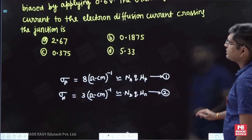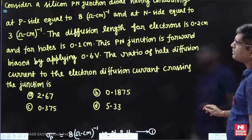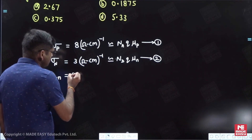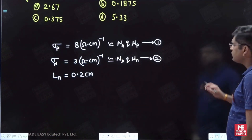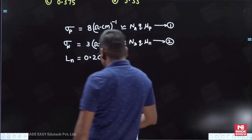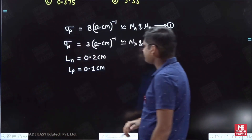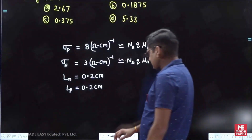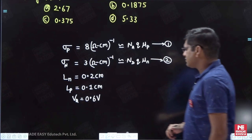Additional information given: the diffusion length for electrons, L_n, is 0.2 centimeter. The diffusion length for holes, L_p, is 0.1 centimeter. The applied voltage Va is 0.6 volt, and it is forward biased.